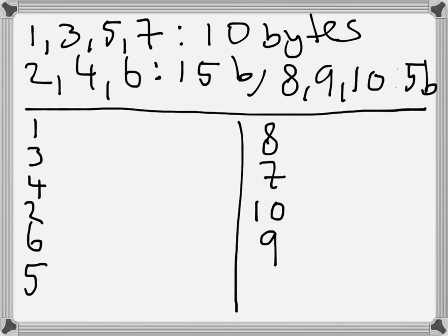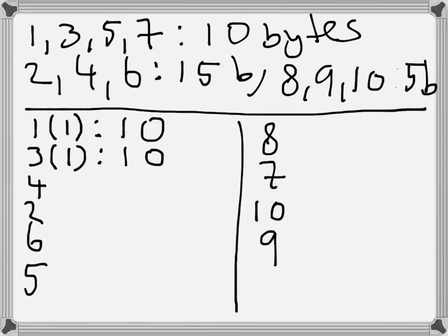When I receive packet number 1, everything is good — the last correctly received packet was number 1 and that contains 10 bytes. Then I receive packet number 3 before receiving packet number 2, meaning the last correct byte I received was still that of packet number 1, because there is a missing gap in between. Without selective acknowledgement (SACK), I cannot indicate there is a hole, so I still use acknowledgement number 10.